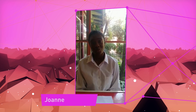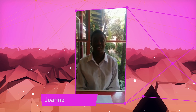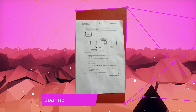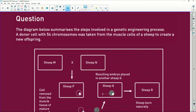Hi, my name is Joanne and I would like help with question 3.4 on genetic engineering. The diagram below summarizes the steps involved in genetic engineering. When you see anything to do with genetic engineering, remember we are looking at artificial selection as opposed to natural selection — this is artificial selection.